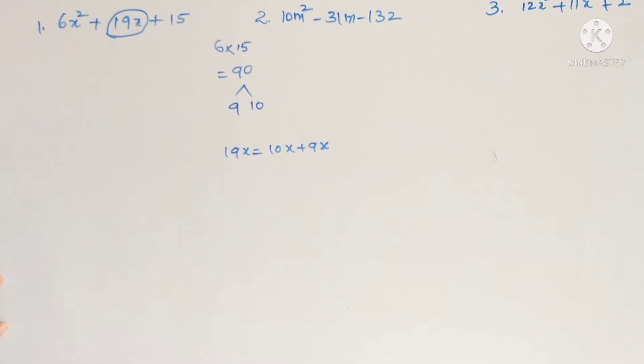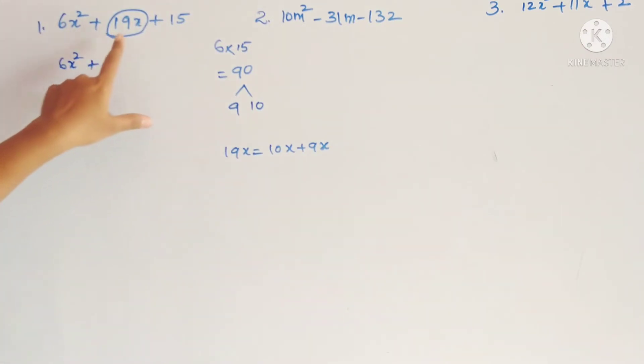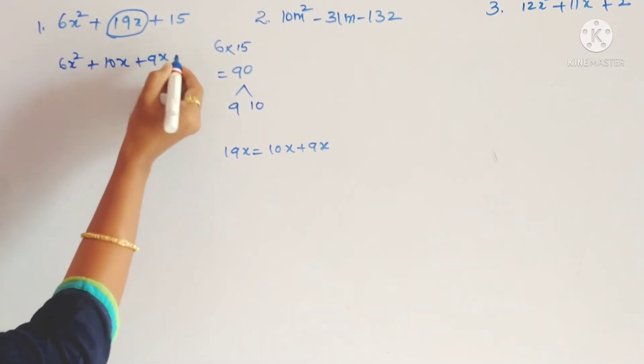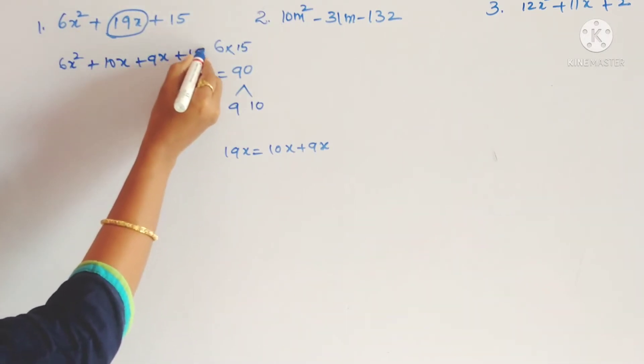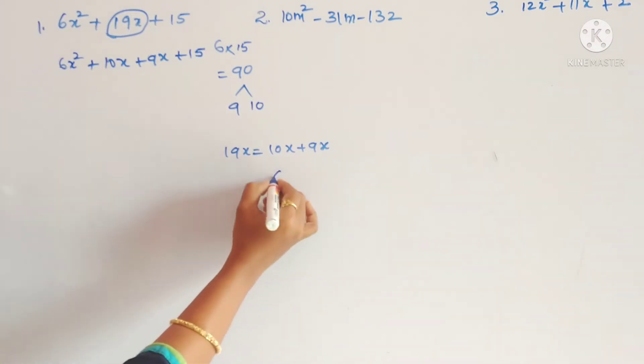So 19x, in this problem we will write as 10x plus 9x. Okay students, so see 6x square, this is common, and this 19x we are splitting as 10x plus 9x plus 15.